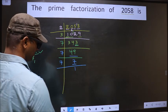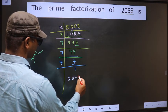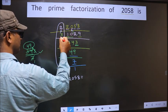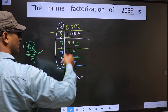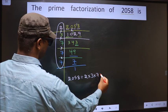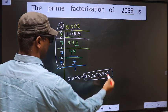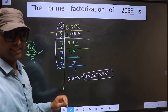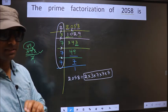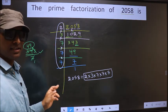We got 1 here. So the prime factorization of 2058 is the product of these numbers. That is 2 into 3 into 7 into 7 into 7. This is the prime factorization of 2058. This is also called the product of prime numbers of 2058. Am I clear?